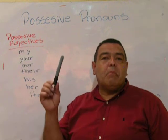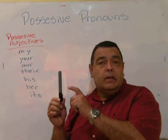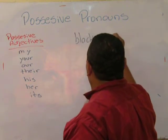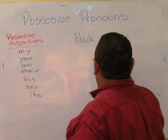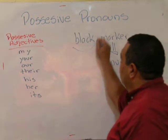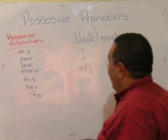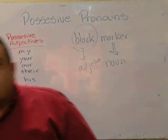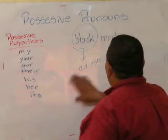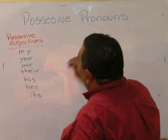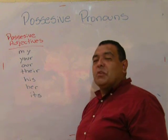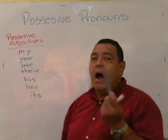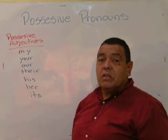Take this marker — black marker. The adjective is 'black,' and the noun is 'marker.' Now, adjective. But this is not today's lesson; I'm just trying to refresh your mind. So what was a possessive adjective? It was a description telling me that something belonged to somebody. For example, this is my marker. This is a possessive adjective for myself.